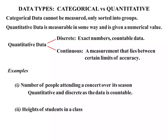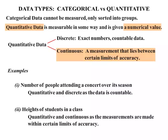Part two: the heights of students in a class. Again it's quantitative data because a numerical value will be given. But this time it's continuous, because the measurement lies between certain limits of accuracy. Depending on what instrument you're using will determine how accurate the measurement will be — so quantitative and continuous.